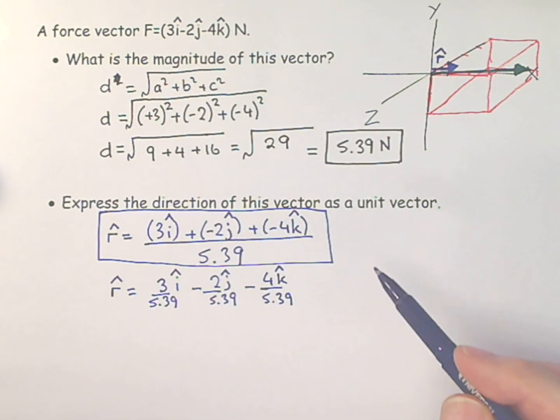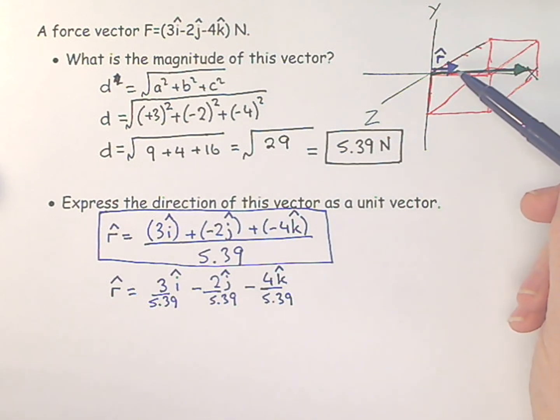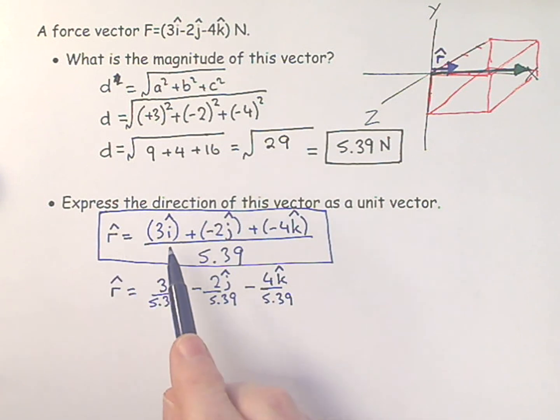So two skills. One is, can you work out the magnitude for a three-dimensional vector? And then the second thing is, can you work out a unit vector which has the same direction as the original vector? And the trick is, you take the original vector and divide it by its own magnitude.